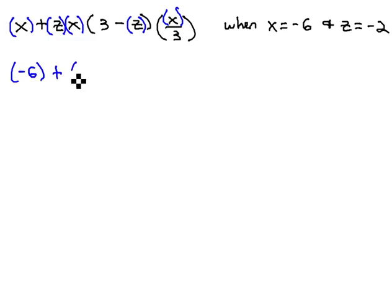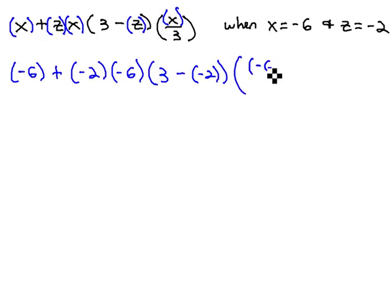plus z, which is negative 2, x, which is negative 6, times 3 minus z, which is negative 2, times x, which is negative 6, over 3. And again, we've got the same exact problem written down. We've just replaced the x's with negative 6, and the z's with negative 2.